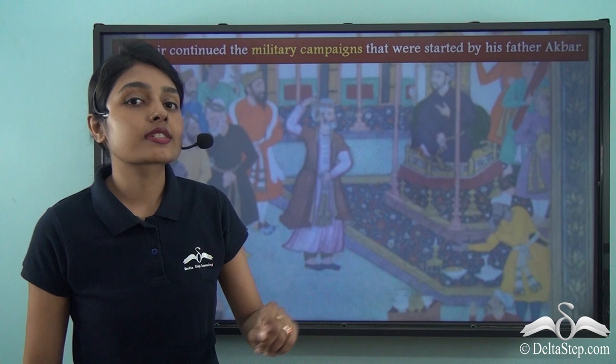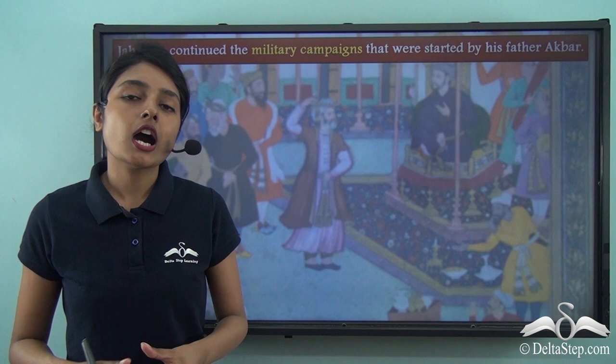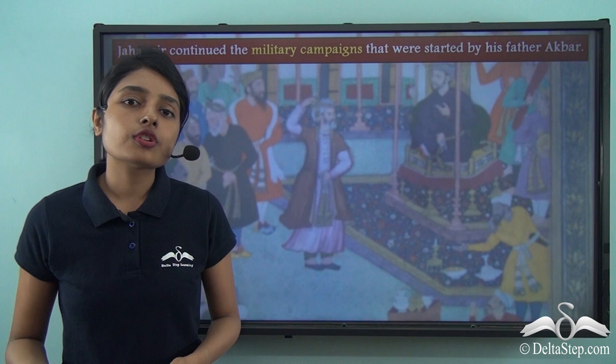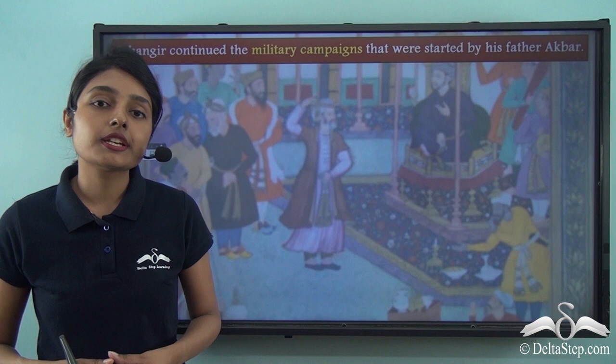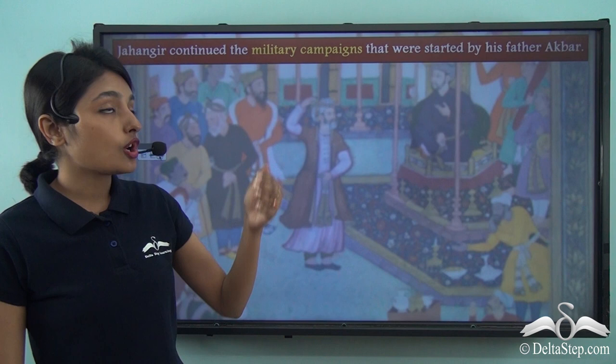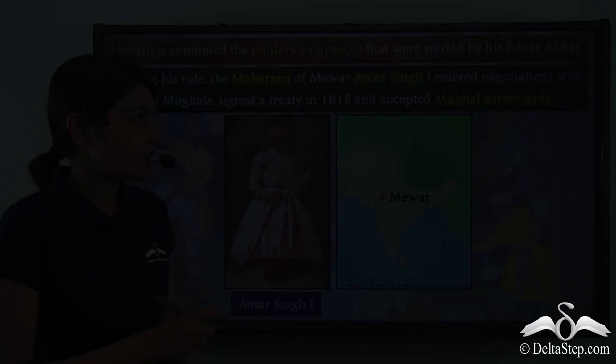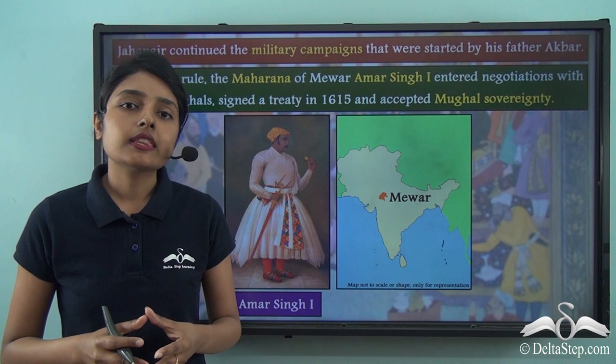Jahangir continued the military campaigns started by his father Akbar. In our last lesson we learned about Akbar's very successful military career — how he controlled various regions and annexed many kingdoms to consolidate the Mughal Empire. His successor Jahangir kept on continuing these military campaigns.